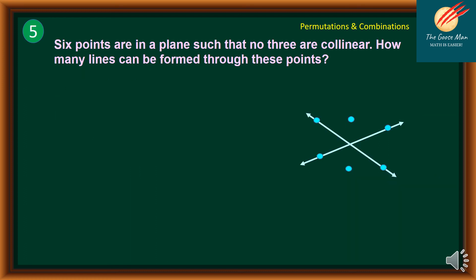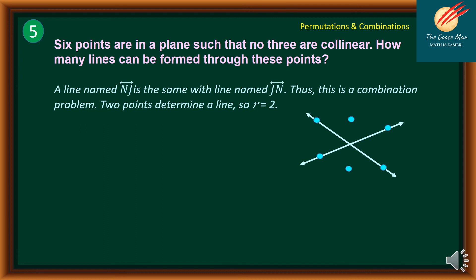Let's move on to problem number 5. Six points are in a plane such that no 3 are collinear. How many lines can be formed through these points? Consider the illustration: a line NJ is the same as line JN, so different orders are not counted. This is a combination problem. Two points determine a line, so r is equal to 2. We use the formula nCr equals n factorial all over n minus r factorial times r factorial, with n equal to 6.